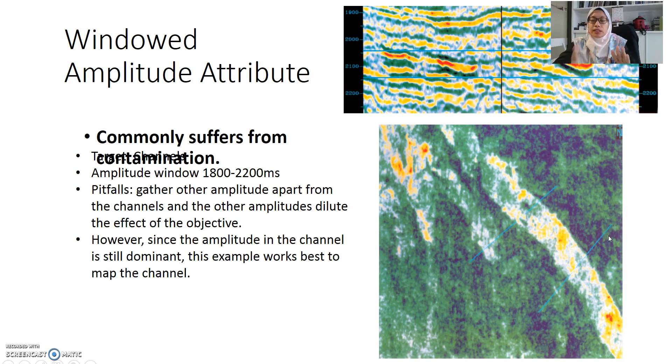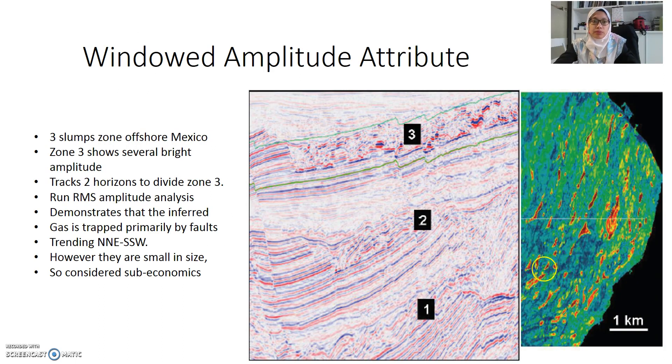Sometimes you can use just a single surface or sometimes you can use a windowed surface, windowed interpretation types such as these examples. Another example for windowed amplitude attribute is we have zone 1, time 2 and time 3. In time 3 we have several points of direct hydrocarbon indicator but they are very chaotic in general. So we use our horizon 1, the light green color and another horizon at the bottom.